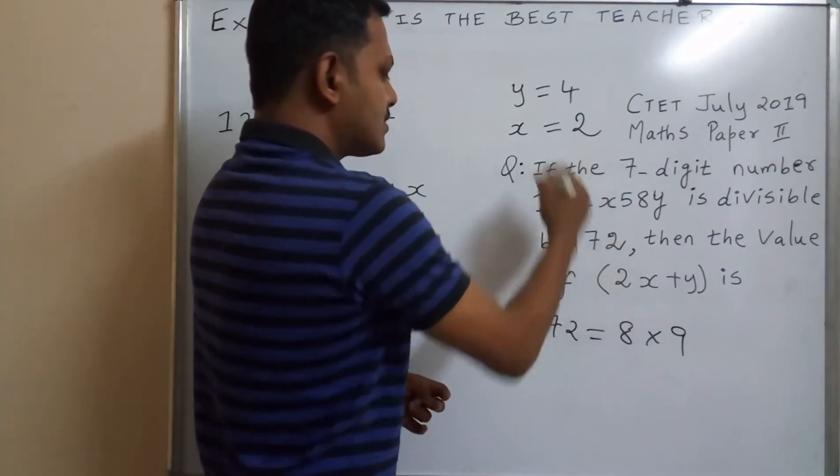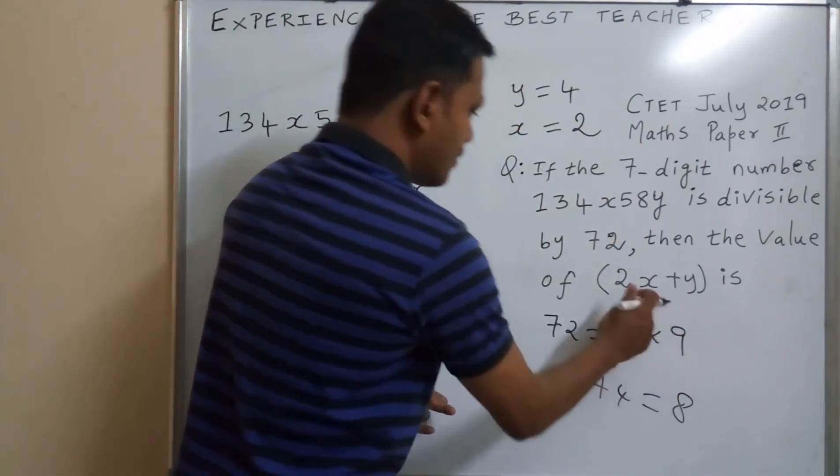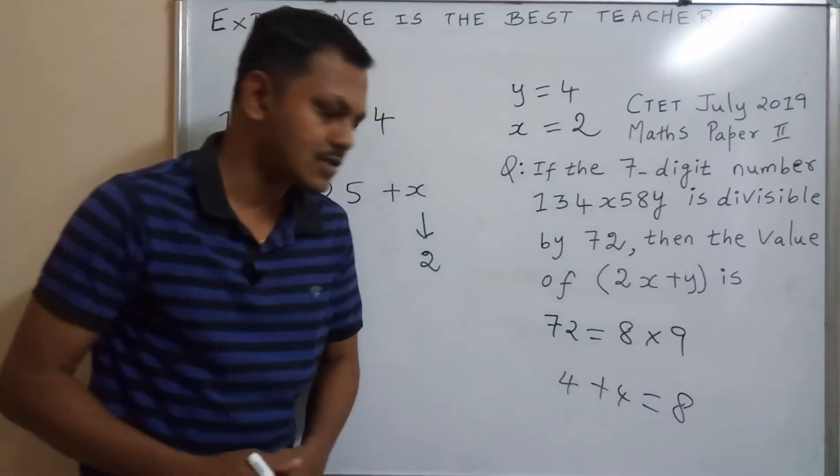Write in this 2. 2x is 2, 2s are 4, plus y value 4, we will get the answer 8. So the answer for this question is 8.